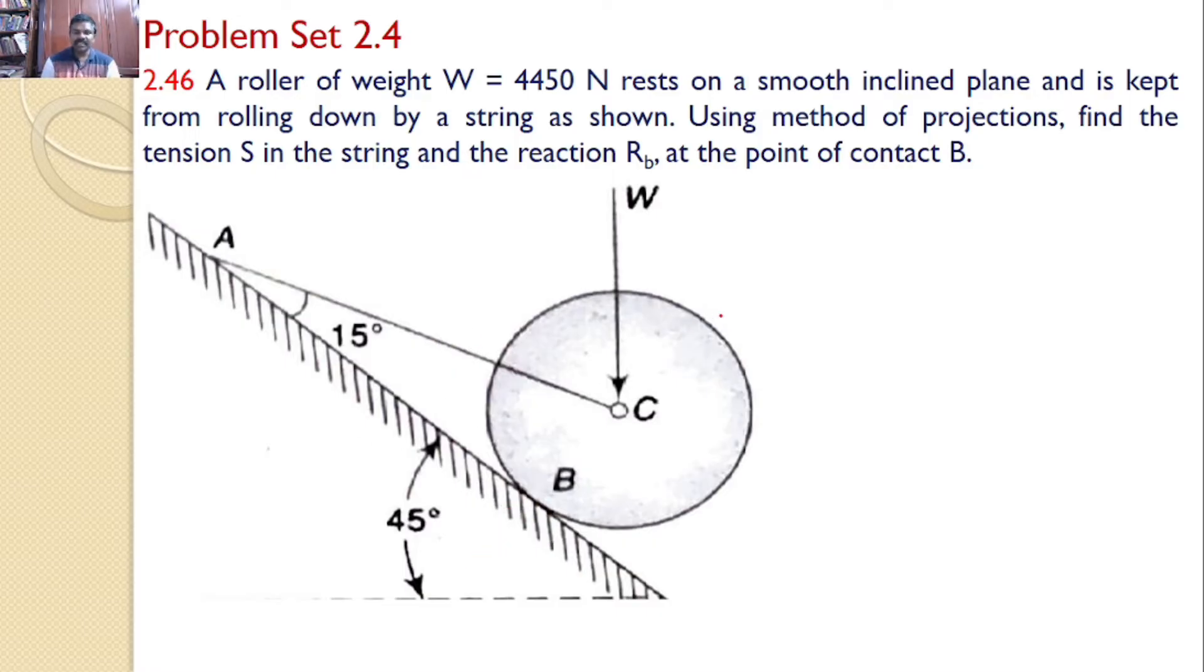Now let us see what are the various forces that are acting on the roller. The first force is self-weight W. Next force is the force along the string. We initially assume that the force is a tensile force and it always acts away from the point of observation.